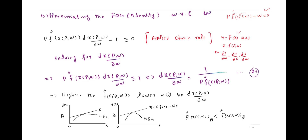The input price change will affect the demand for the factor input, and the change in factor demand will in turn change output — that is why the chain rule is applied. This gives us p·f''(x) multiplied by dx/dw, minus 1. The second derivative term represents the change in the marginal product due to the change in x, and the change in x due to the change in w; the derivative of w with respect to w equals one.